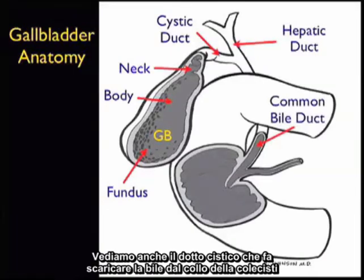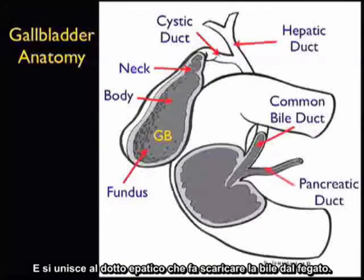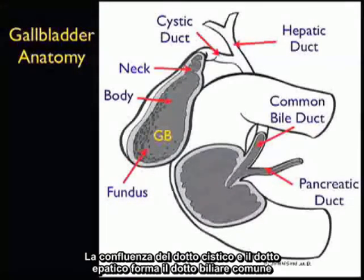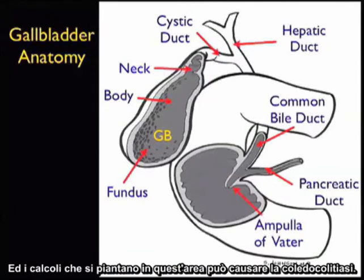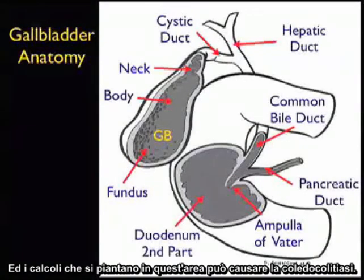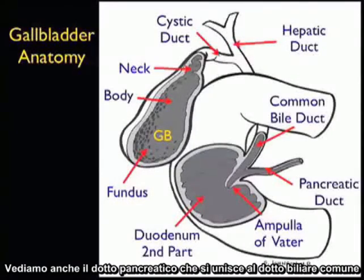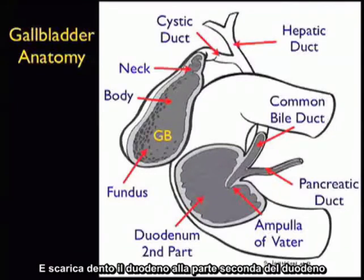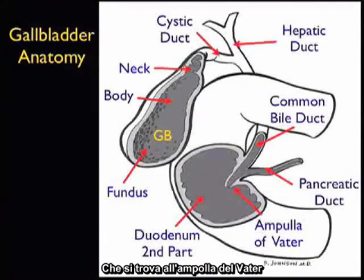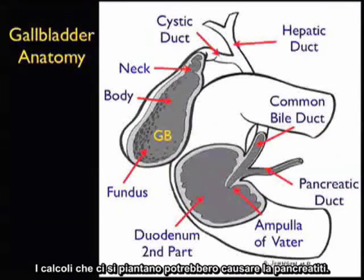We also see the cystic duct draining bile from the neck of the gallbladder and joining the hepatic duct, which drains bile from the liver. The confluence of the cystic duct and hepatic duct forms the common bile duct, and stones lodged within this area can cause choledocholithiasis. We also see the pancreatic duct joining the common bile duct and emptying into the duodenum at the second part of the duodenum at the ampulla of Vater. Stones that may lodge here can cause gallstone pancreatitis.